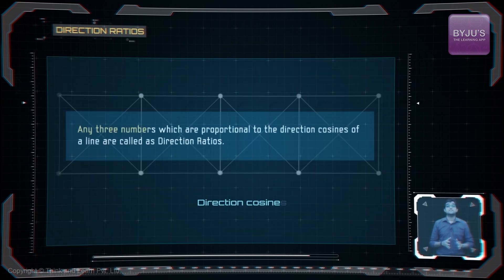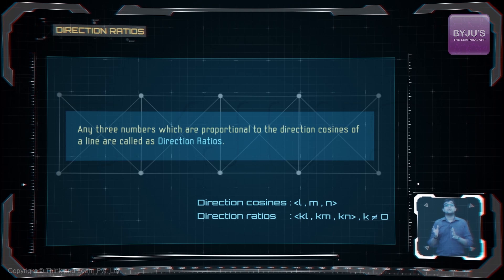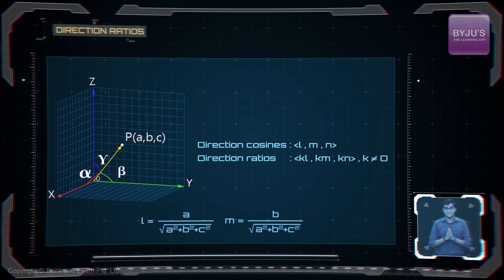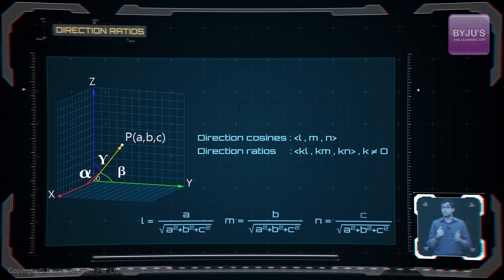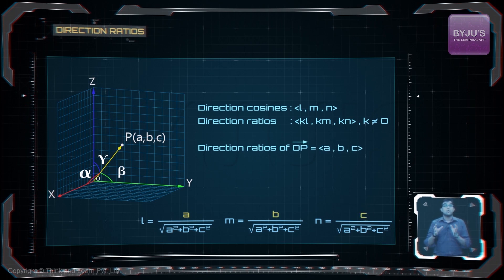Another concept related to direction cosines is that of direction ratios. Any three numbers which are proportional to the direction cosines of a line are called direction ratios. Since A, B, C are proportional to the direction cosines A/√(A²+B²+C²), B/√(A²+B²+C²), and C/√(A²+B²+C²), we can call A, B, C the direction ratios of OP.